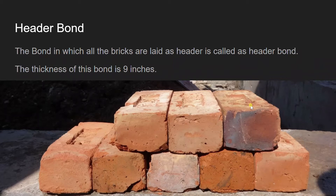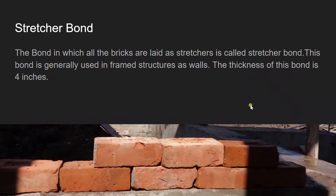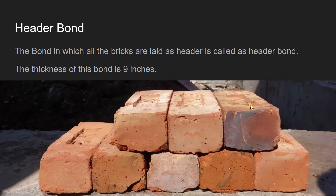The next bond is header bond. The bond in which all the bricks are laid as headers is called header bond. The thickness of this bond is 9 inches. For both stretcher bond and header bond, 4 inches and 9 inches are the thicknesses according to standard brick size.